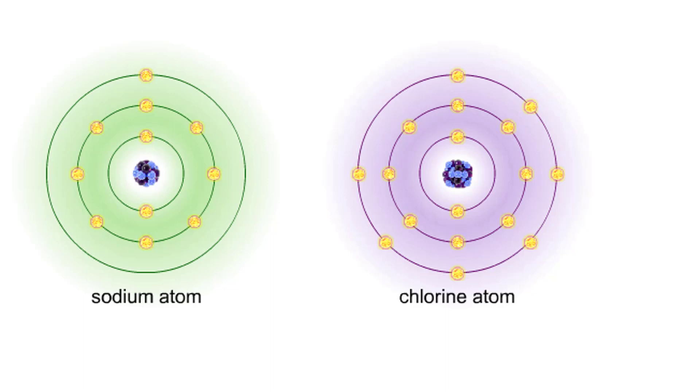Sodium atoms and chloride atoms have unfilled orbitals in their outer shells. The lone electron in the outermost shell of a sodium atom can be pulled or knocked out. This ionizes the atom. It is now a positively charged sodium ion.